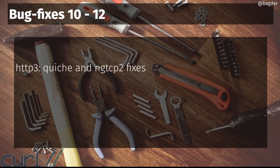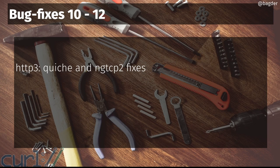Going forward, we did several changes and fixes for HTTP/3 in this release, both in the quiche backend and in the ngtcp2 backend — two different backends that use different libraries. So if you want to build with HTTP/3, you go with one of these forks in the road. We've improved HTTP/3 in both backends. We still have more things to fix, and there are still pending bug reports on HTTP/3 even after this, but we're getting there — taking them one at a time.